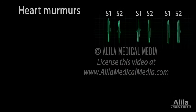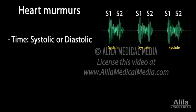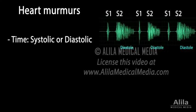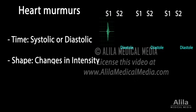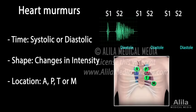Heart murmurs are whooshing sounds produced by turbulent flow of blood. Murmurs are diagnosed based on the time they occur in the cardiac cycle, their changes in intensity over time, and the auscultation site where they are best heard.